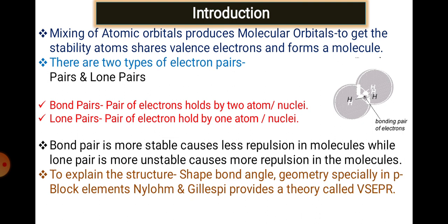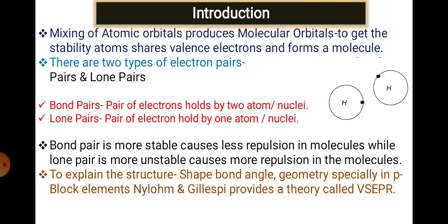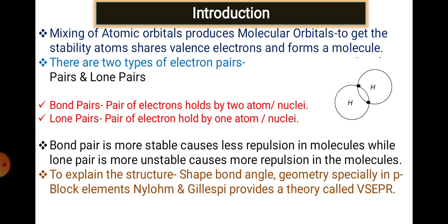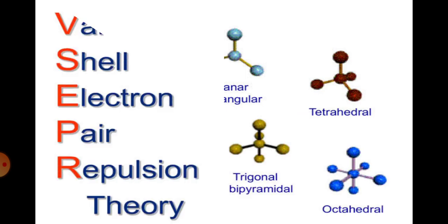To explain the structure, shape, bond angle, and geometry — especially in the P-block system — we have this theory developed by Nyholm and Gillespie, called Valence Shell Electron Pair Repulsion theory, also called VSEPR. This theory explains the particular shapes of molecules produced. There are other theories to explain bonding in other molecules, but we are strictly using VSEPR for the P-block.